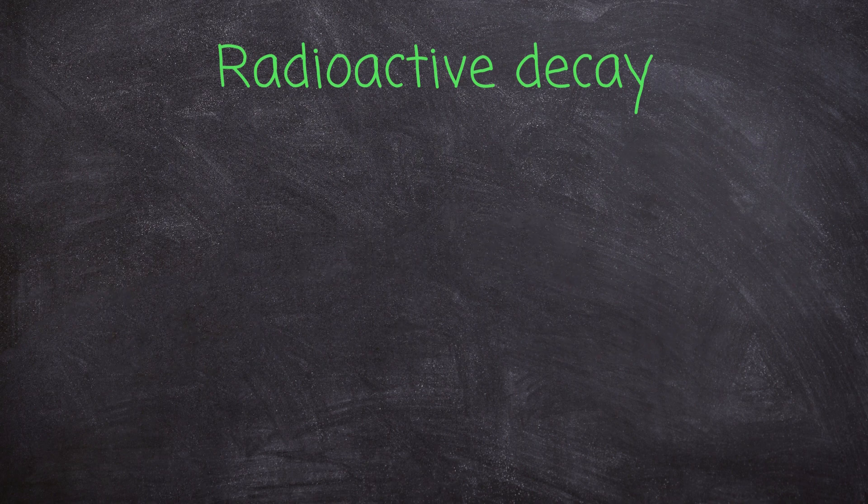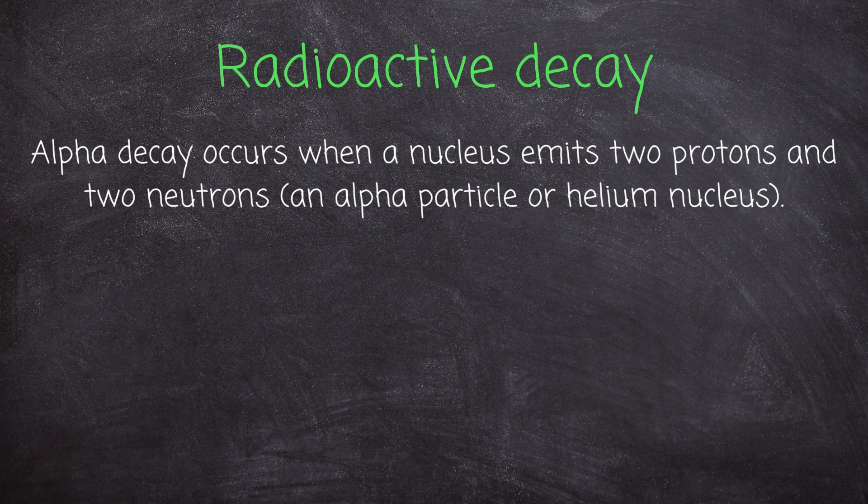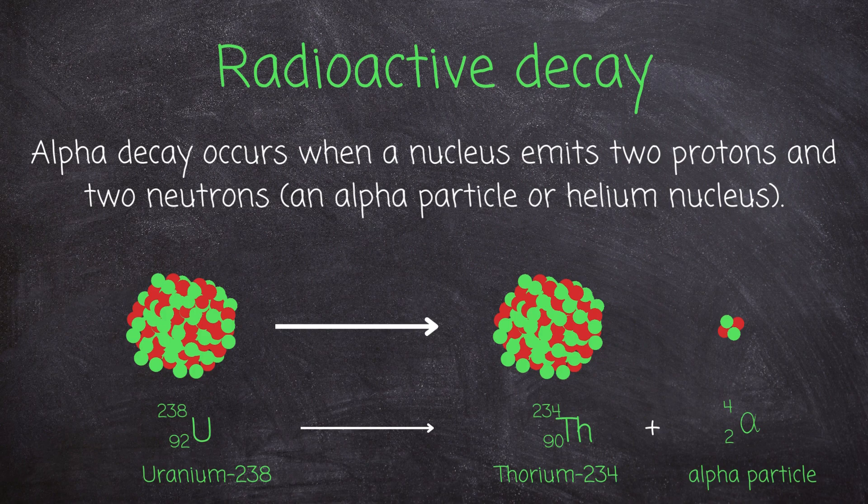Alpha decay occurs when a nucleus emits two protons and two neutrons, which is called an alpha particle or helium nucleus. An example of alpha decay is when uranium-238 emits an alpha particle and becomes thorium-234.